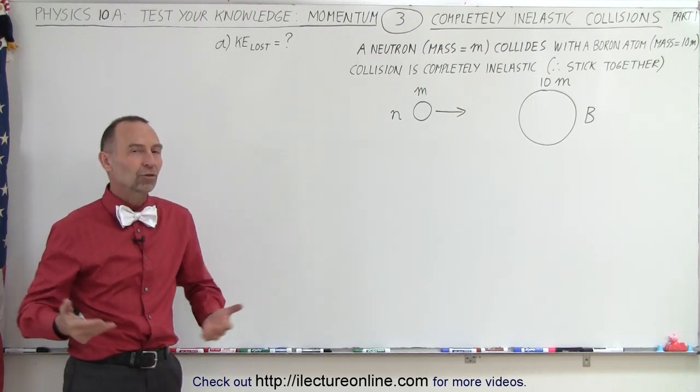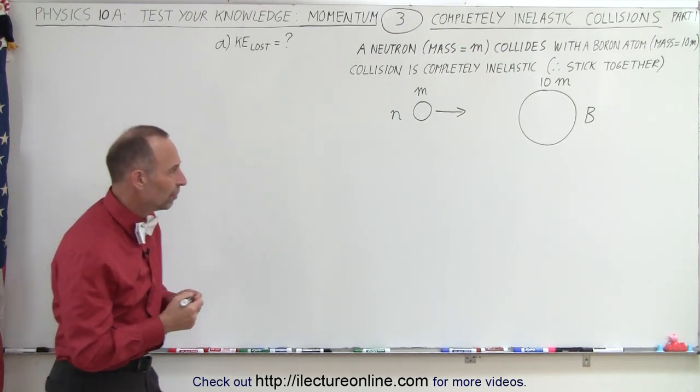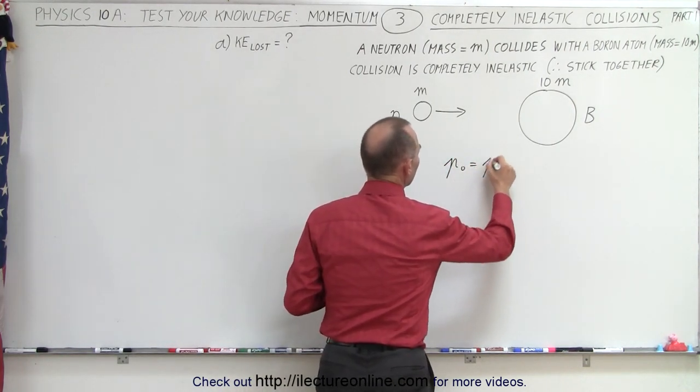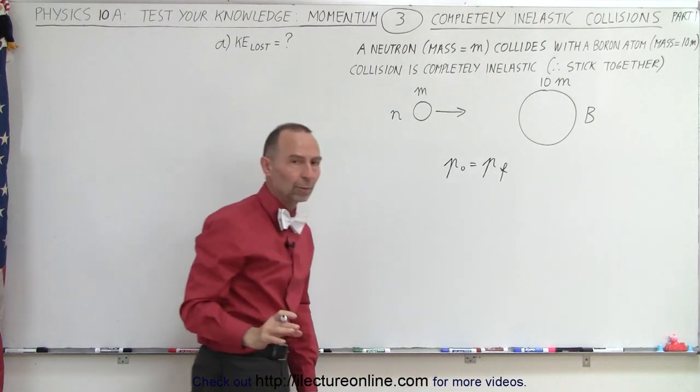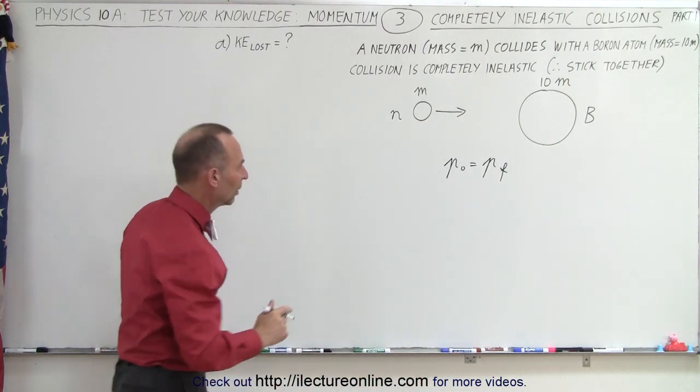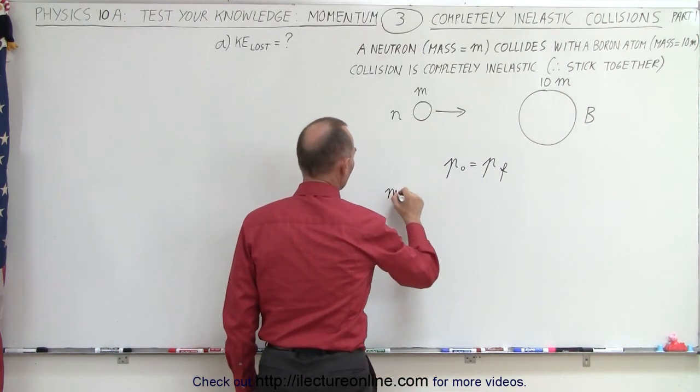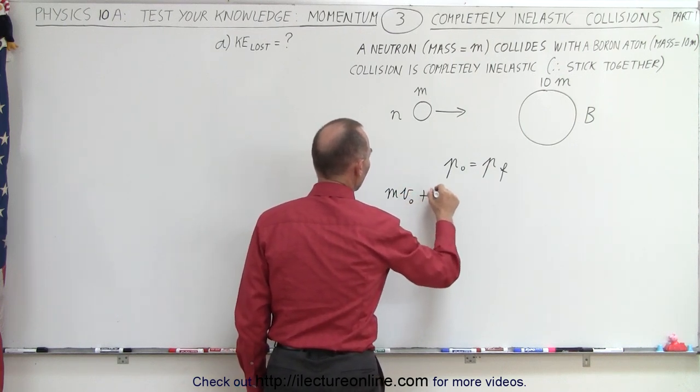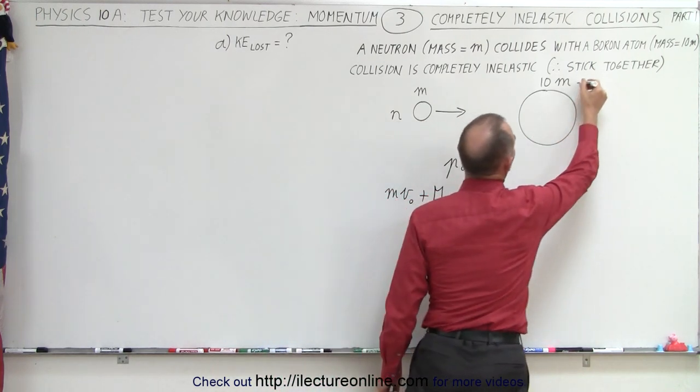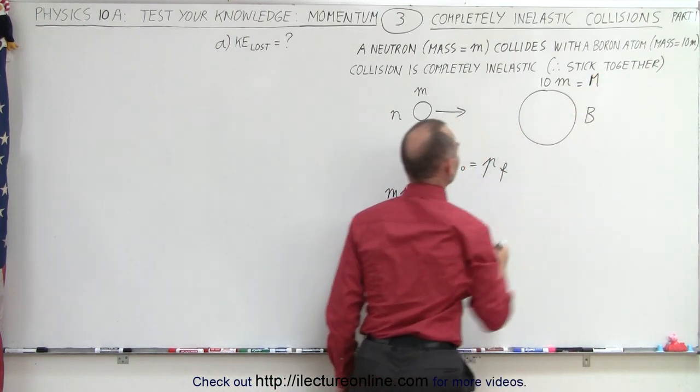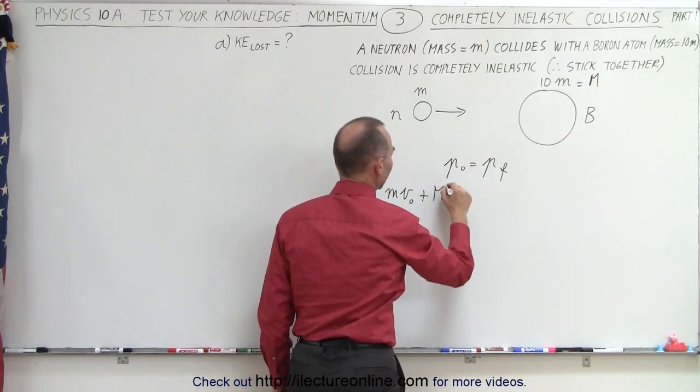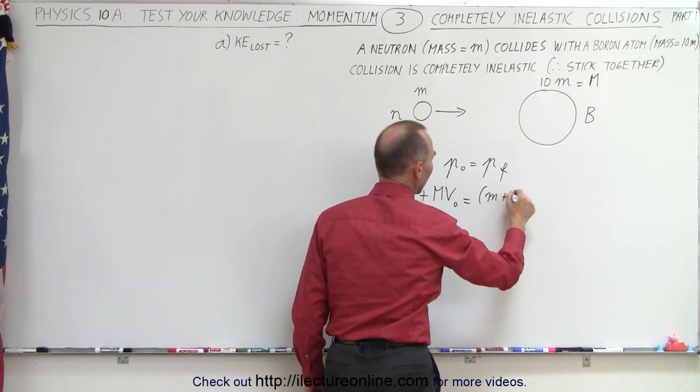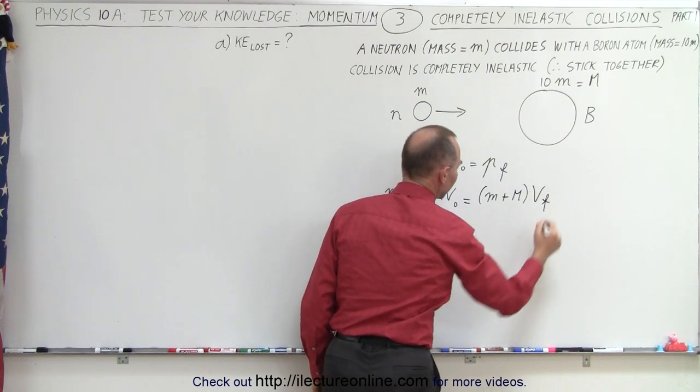The way we're going to do that is use the conservation of momentum where we can say that p initial equals p final. We're going to assume that the boron atom was motionless before impact. So that means that the mass of the neutron times the initial velocity neutron plus the mass of the boron, and I'll go ahead and use capital M to indicate that it's 10 times the mass of the neutron times v initial equals, since they stick together, we could write m plus big M times v final.